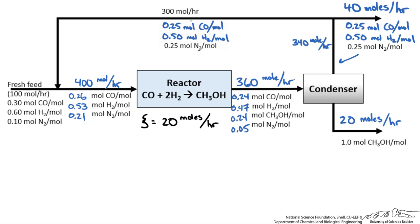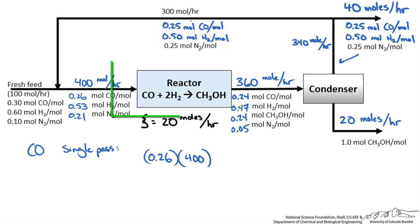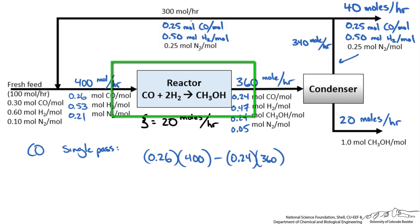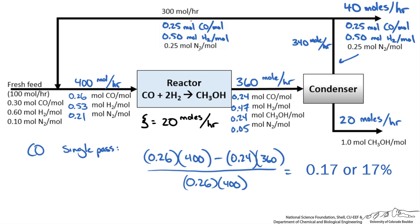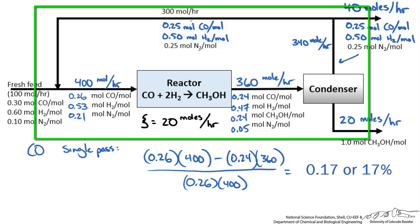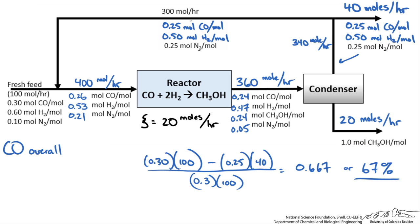We can now calculate single pass and overall conversions. The single pass conversion for carbon monoxide is the moles entering the reactor minus moles leaving, divided by moles entering. With 0.26 × 400 entering and 0.24 × 360 leaving, we get approximately 17% single pass conversion. For overall conversion, we use values entering and leaving the entire process: 30 moles of carbon monoxide entering, a certain fraction leaving in the purge, giving an overall conversion of roughly 67%.